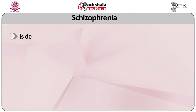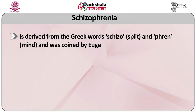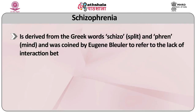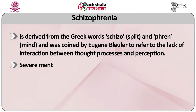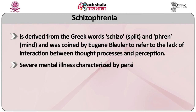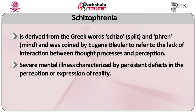Schizophrenia is derived from the Greek words 'schizo' meaning split and 'phren' meaning mind, and was coined by Eugen Bleuler to refer to the lack of interaction between thought processes and perception. It is a severe mental illness characterized by persistent defects in the perception or expression of reality. Schizophrenia does not involve a person changing between distinct multiple personalities. Onset typically occurs in late adolescence or early adulthood, with males tending to show symptoms earlier than females.